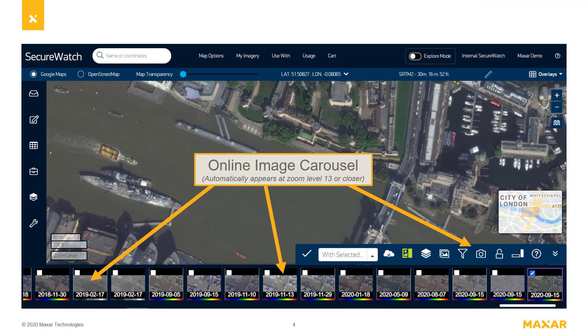Images ordered or published to the online image carousel stay there for one month and are then automatically removed. You can reorder an image from the archive back to the online image catalog as many times as you want.